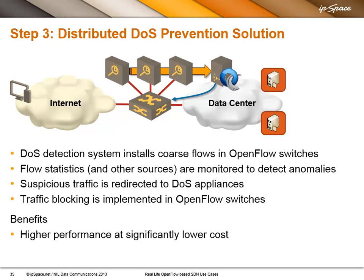You can also implement a distributed denial of service prevention solution. Instead of putting appliances in the forwarding path, you install — depending on how much TCAM you have in the OpenFlow switch — a number of coarse-grained flow forwarding entries pointing from outside to inside, and then you monitor traffic on these flows. The moment you get a hotspot, you redirect that traffic to a denial of service prevention or traffic scrubbing appliance. That appliance cleans out the traffic, removes the DoS attacker, and sends the rest into your data center. The controller then starts collecting that data automatically, as covered in the first use case.